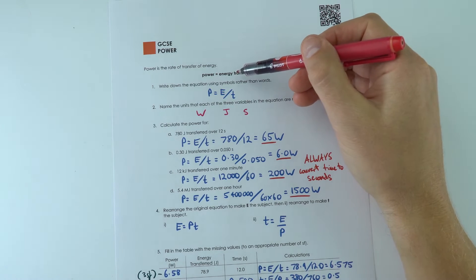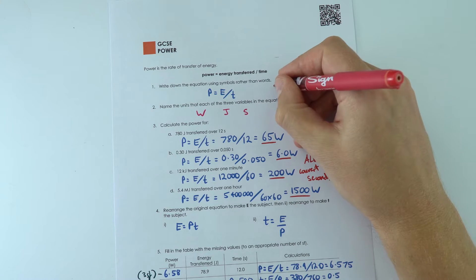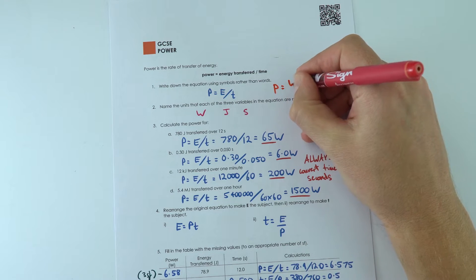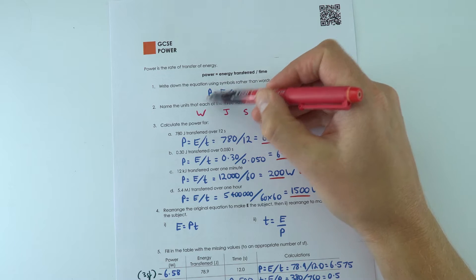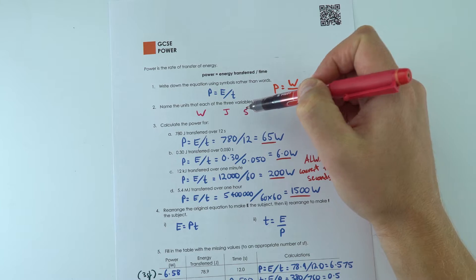So power is the rate of energy transfer. Sometimes we can also use the equation that says power is equal to the work done divided by the time taken. But power is measured in watts, energy in joules, and we always use time in seconds.